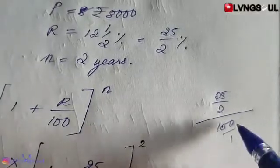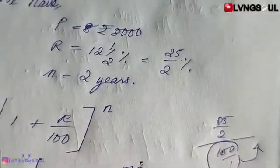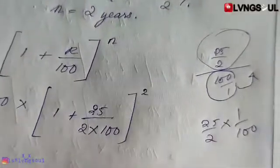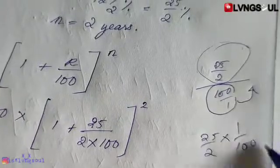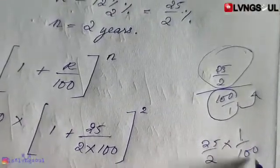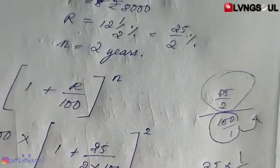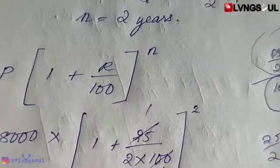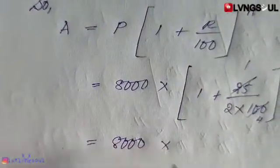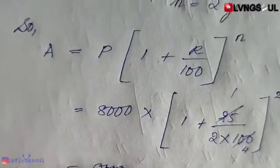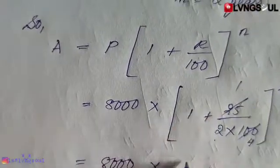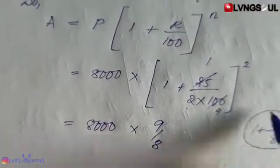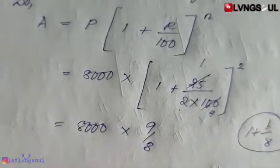Working with fractions: 25 by 2 into 100. From 1 by 100 reciprocal is 100 by 1. So 25 into 1 over 2 into 100 gives 1 by 8. Therefore 1 plus 1 by 8 equals 9 by 8. So 8 plus 1 is 9 by 8, squared.